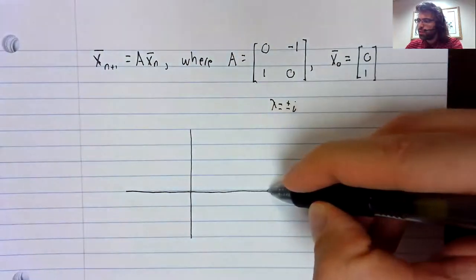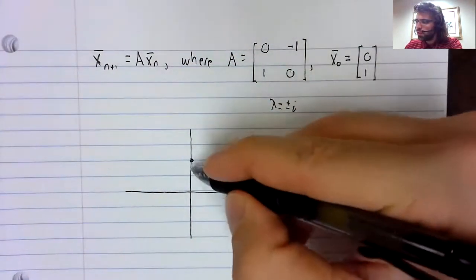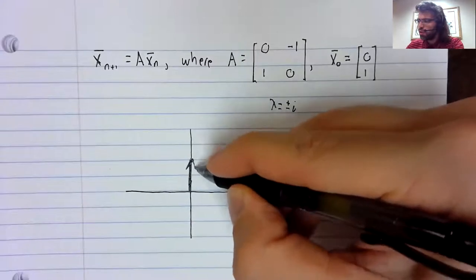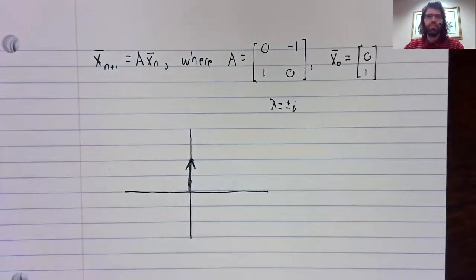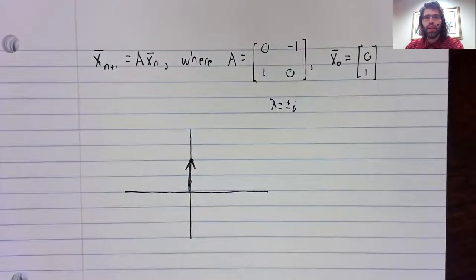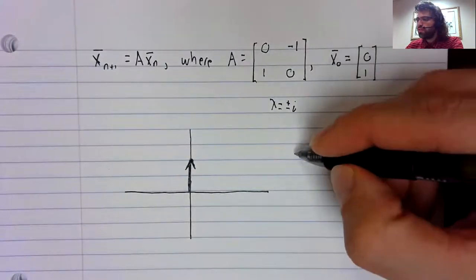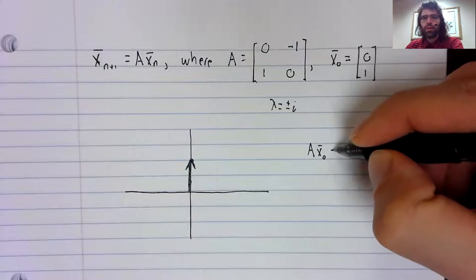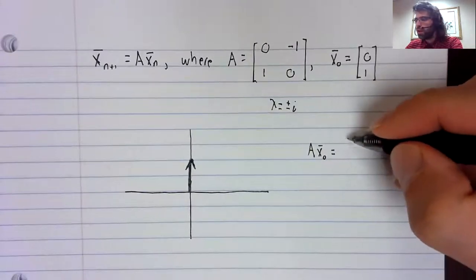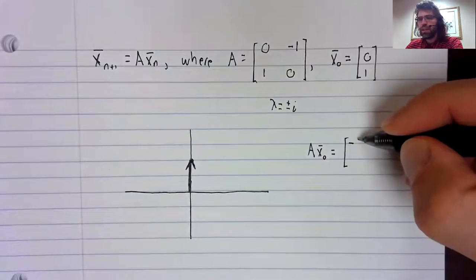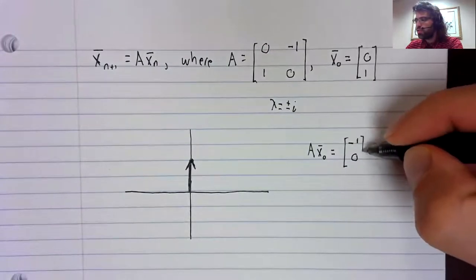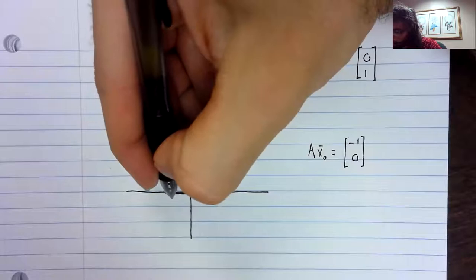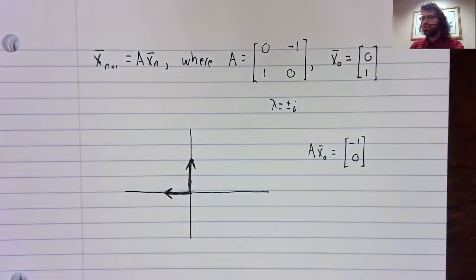So here is the vector X₀. When you multiply this by A, you wind up at negative one, zero. So A takes you there.